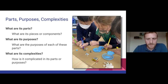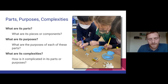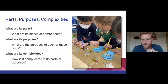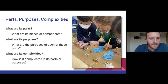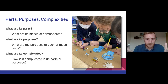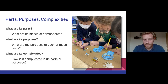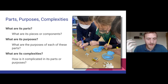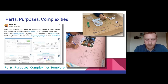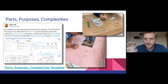The next routine is called Parts Purposes Complexities. You might use simpler words with younger students, but this is all about looking closely and thinking about how objects work. In the picture, students have actually broken an object apart, which adds value to this — though you don't have to if it's not appropriate. The questions get deeper as we go: first, what are the parts? — simply labelling them. Second, what are the purposes of each of those parts? And third, how is it complicated in the way those parts work together? This is a great routine for thinking about all of the objects around students and how they work.